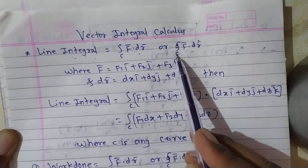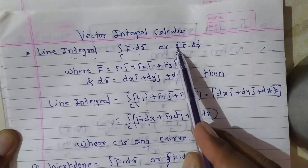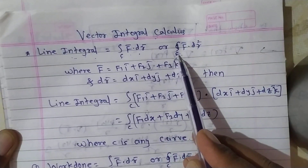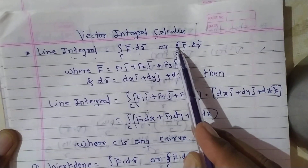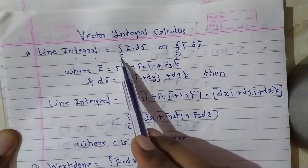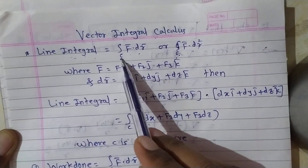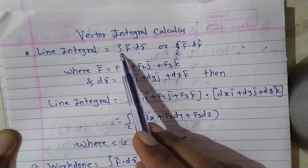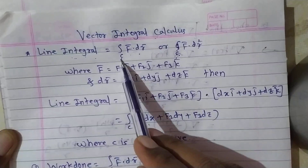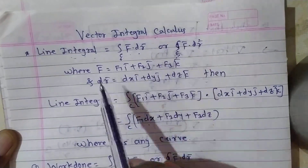Or the closed integral over c of f̄·dr̄ — this circle symbol is called a counter integral or closed integral. We use the closed integral when c is any closed curve, for example when c is a circle or an ellipse. When c is an open curve, such as a straight line, arc of a straight line, or arc of a parabola, we use the open integral over c of f̄·dr̄.